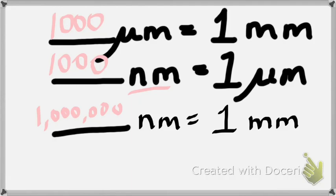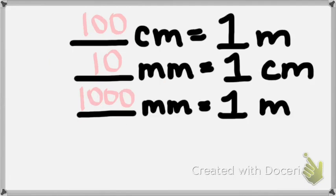Look at the conversions on the screen. Looking at step number two on our handout, I want you to make those conversions. You might need the information on screen. Complete the following conversions, then check your neighbor and see how they did.